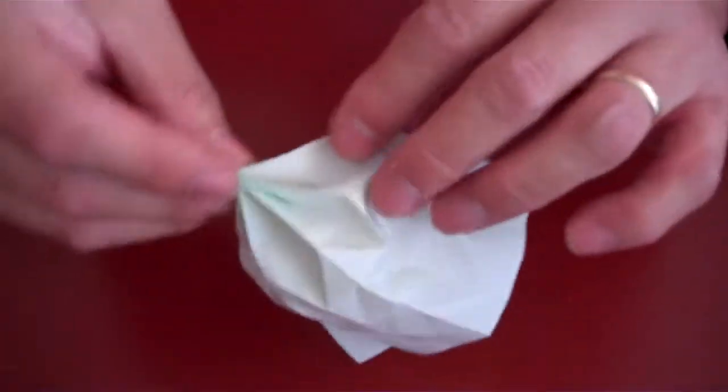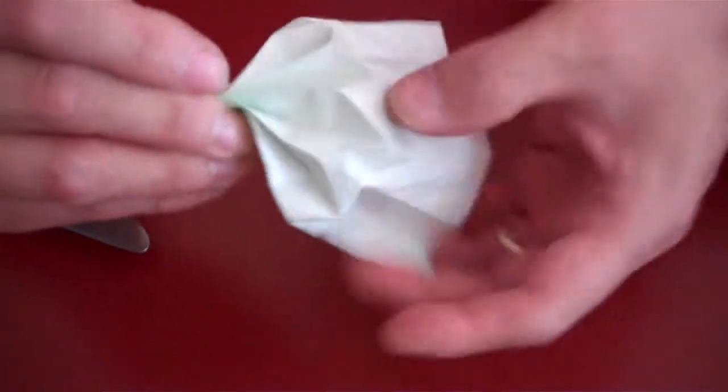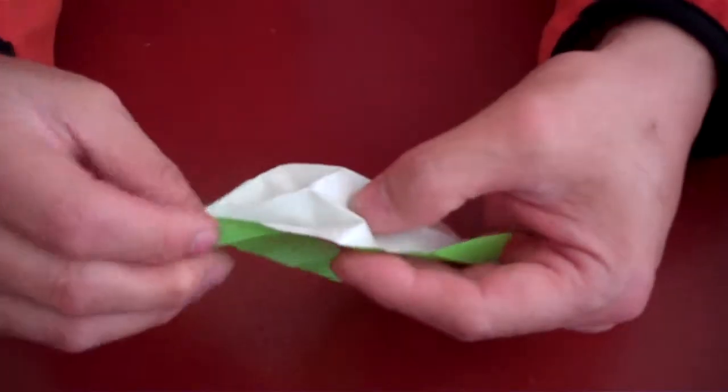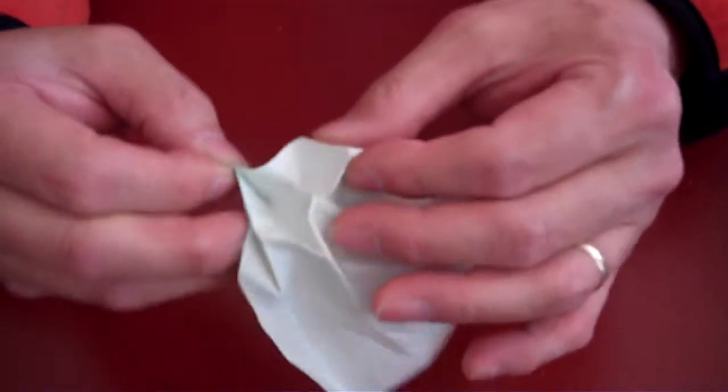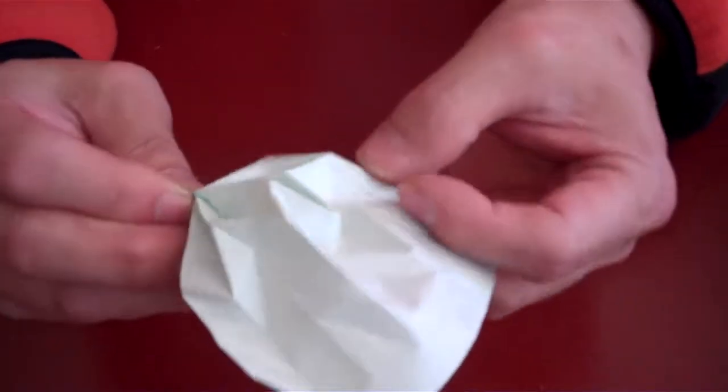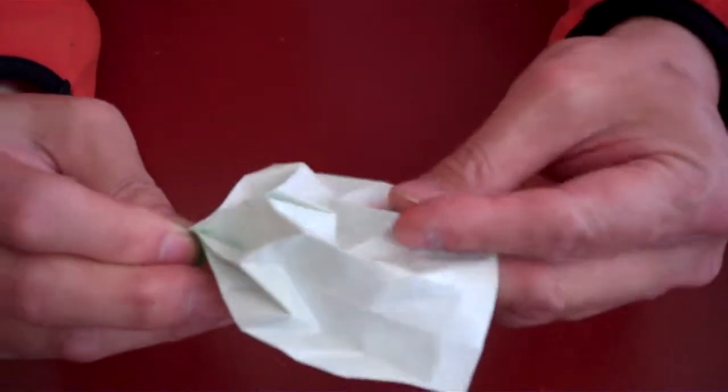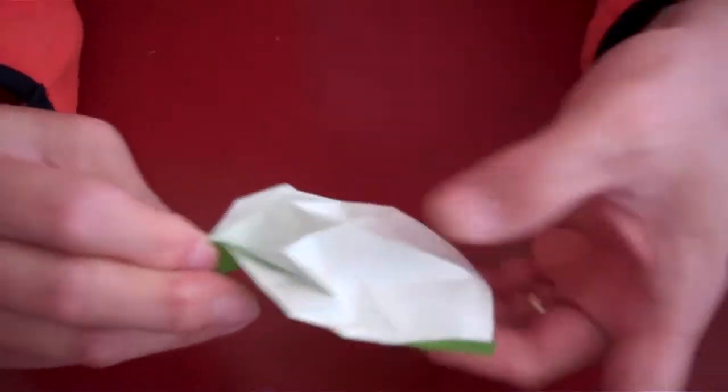So, we have a series of ridges that go one way first. Like so. Push it down. And then, make a series of ridges going the other way.